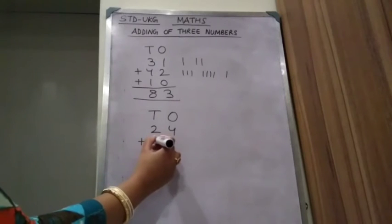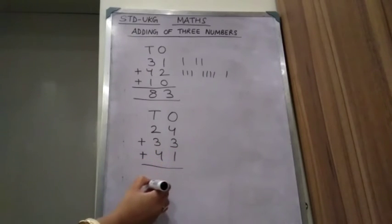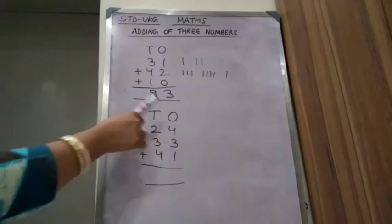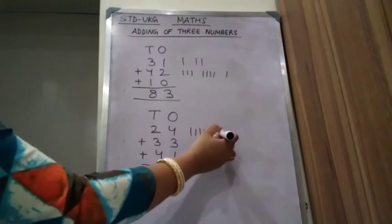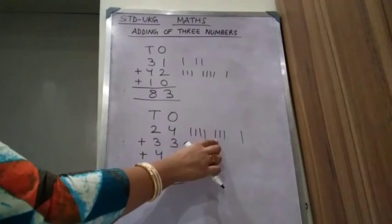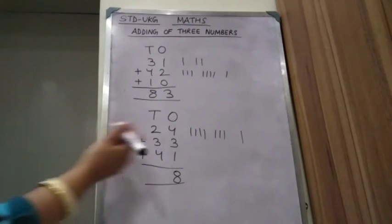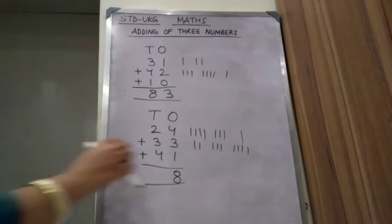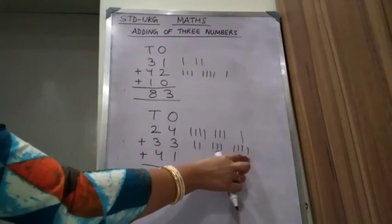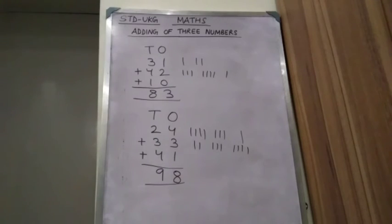24 plus 33 plus 41. First we have to calculate the ones column. The numbers are 4, 3, 1. Count: 4, 5, 6, 7, 8. Write 8 in the ones column. Now see the tens column: 2, 3, 4. Count all together: 2, 3, 4, 5, 6, 7, 8, 9. The answer is 98 — 9 tens, 8 ones.